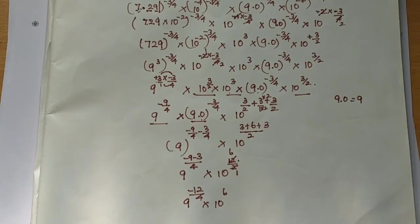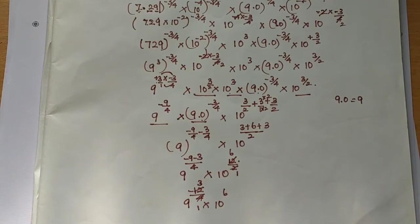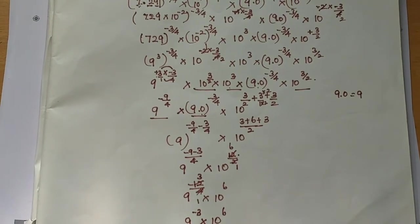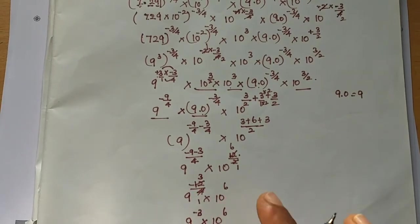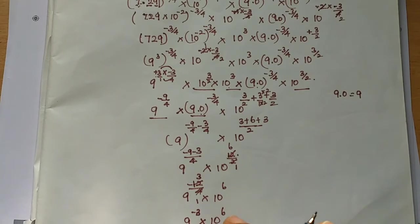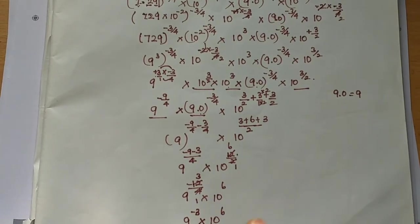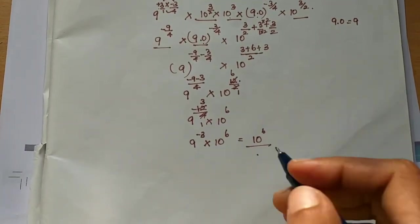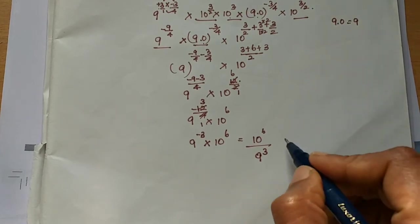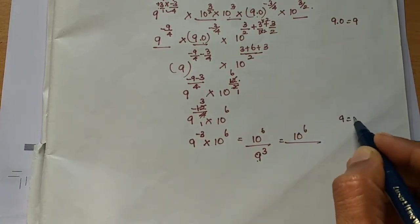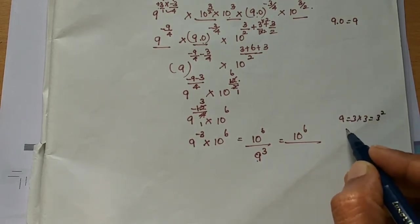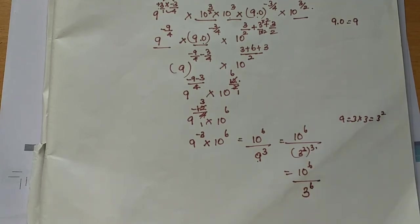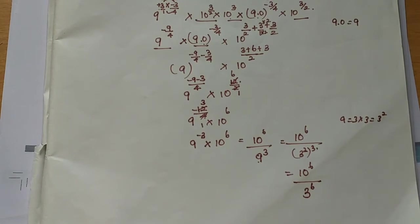So 9 power minus 3, into 10 power 6. Now this power is minus, so 10 power 6 is in the bottom — this power minus means we put it in the denominator. That will be plus, so 10 power 6 in the numerator, 9 power minus 3 in the denominator means 9 power 3. So 10 power 6 by 9 cubed — 3 times 3 is 3 squared, so 3 square the whole power 3 in denominator, which is 3 power 6. So 10 power 6 by 3 power 6 — this is the answer for the 18th question.